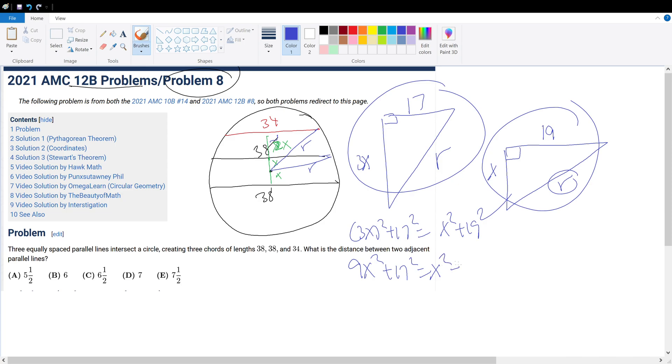So we will get this, and if we simplify this a bit, we have 8x squared equals 19 squared minus 17 squared, which is 361 minus 289, which gives us 72. Now x squared equals 72 divided by 8, which gives us 9, which is a really nice number. Now x equals 3, if we take the square root.